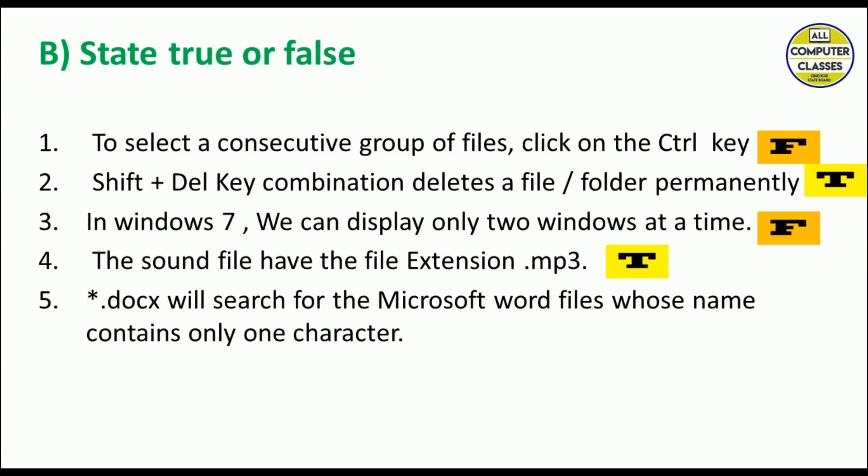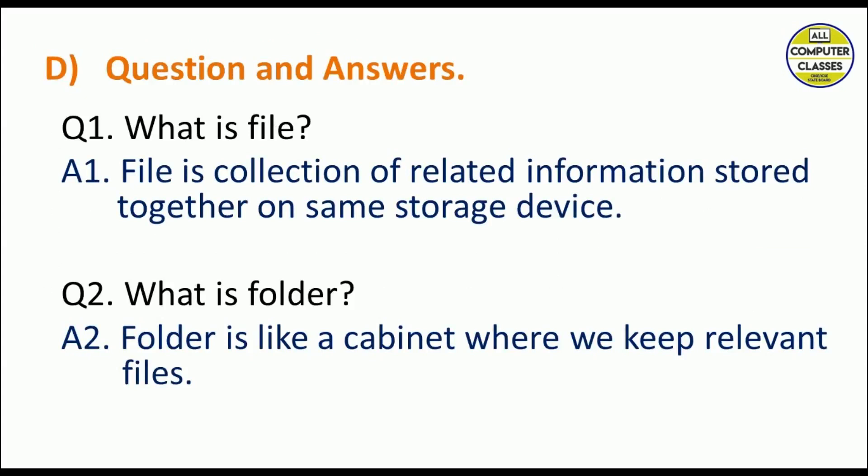Question answers. What is file? File is a collection of self-related information stored together on the same device. Like you have an MS Word file, so the entire file will be having relevant information. What is a folder? Folder is like a cabinet, like drawers on your table where you keep the relevant files. For example, there is a picture folder, so all the pictures are kept there. There is a document folder, there is a download folder, so all those folders contain a particular type of files.